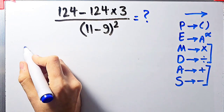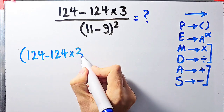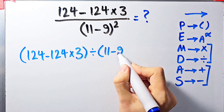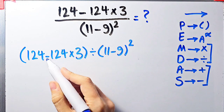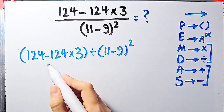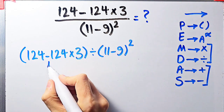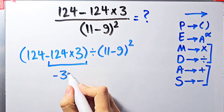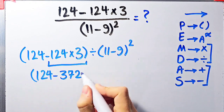Let's simplify and solve this question step by step. We have 124 minus 124 times 3, divided by open parentheses 11 minus 9 close parentheses, all to the power of 2. According to the PEMDAS rule, first we simplify the parentheses. Inside the brackets we have subtraction and multiplication — we do multiplication first because it has higher priority.